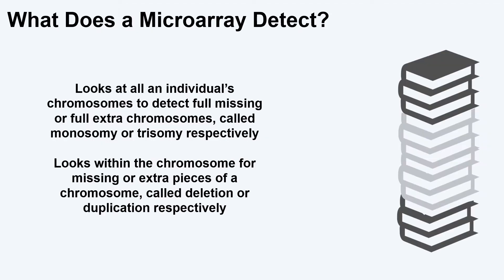A microarray looks at all of an individual's chromosomes. This test will tell us if a person has the typical number of chromosomes, which is 46, or if they have any missing or extra copies of their chromosomes. When a full chromosome is missing, it's called monosomy, and when there is a full extra chromosome present, it's called trisomy.